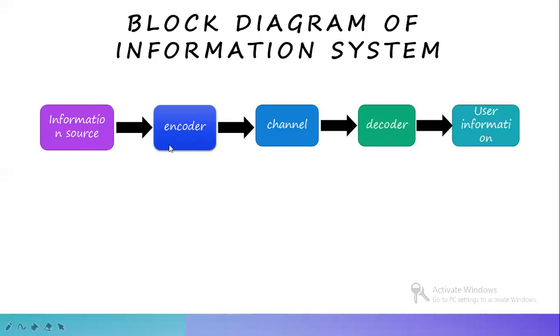The source decoder converts the binary output of the channel decoder into the symbol sequence. The transmitter couples the input message signal to the channel — that is, the transmitter comprises the information source and encoder. The receiver is the decoder and user information; the receiver will always identify the symbol sequence and match it with the correct sequence. After understanding the block diagram, we will next move on to the measure of information, and before that, we need to know the information content of a message. For this, we will consider a scenario.